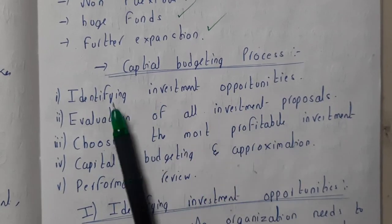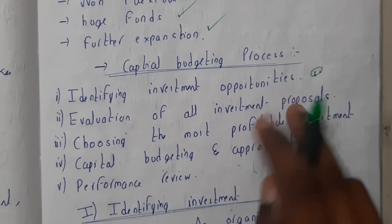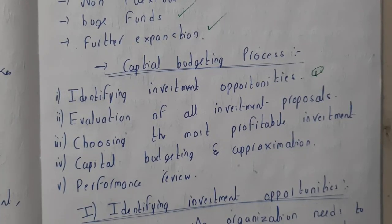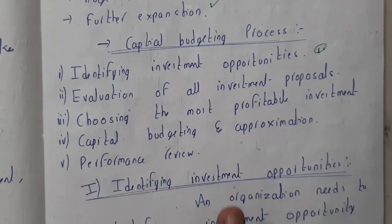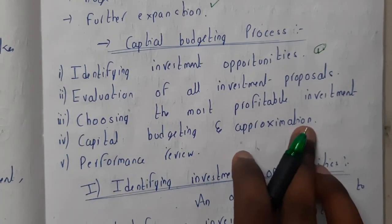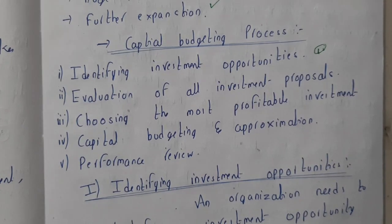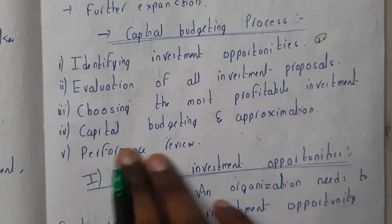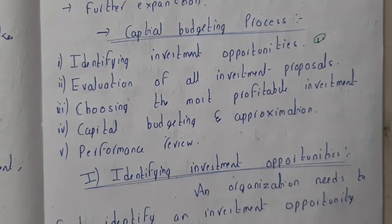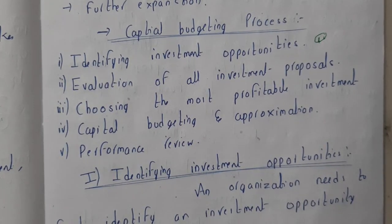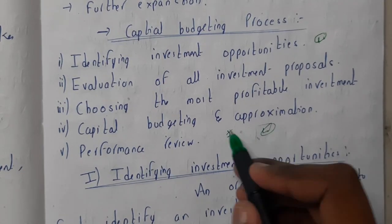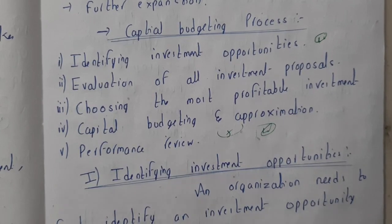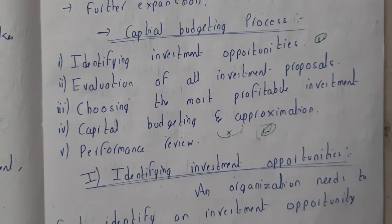After identifying investment opportunities — let's say you identified 10 — you'll be evaluating all the investment proposals. You'll rank them in ascending order of increasing profit. After that, you'll choose the most profitable investment — the highest profit-returning one — and invest in it. Then you'll be calculating the capital budgeting approximation: for example, if I invest 5 lakhs I'm going to get 10 lakhs in 5 years.